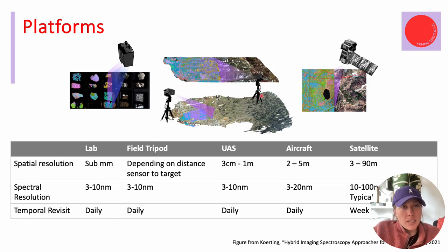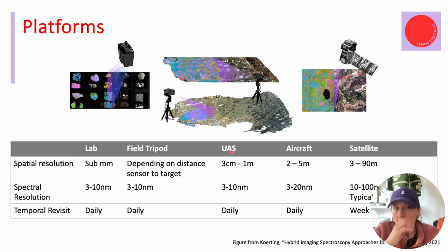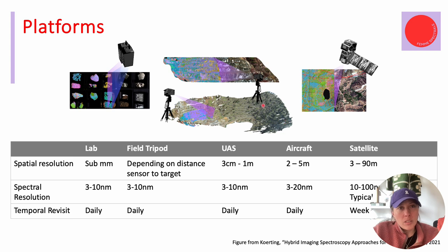We have a couple of different platforms, sorted by spatial resolution — from lab to field when mounted on a tripod, to UAS, to aircraft, and satellite. UAS pixels are typically 3 to 15 centimeters depending on flying height. Within European and international law, you're generally not allowed to fly higher than 120 meters above ground level without specific permission, so people usually stay under that.